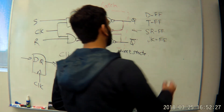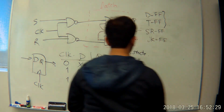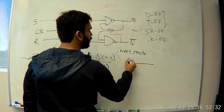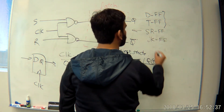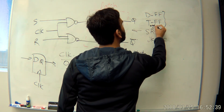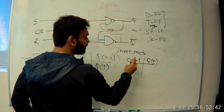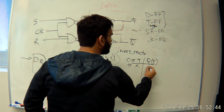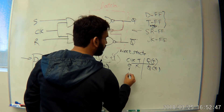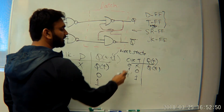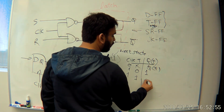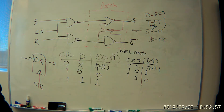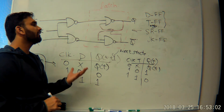T flip-flop is exactly the same structure, but the only difference is that it toggles — T stands for toggling. When the clock is off, it holds the previous state. When the clock is on, instead of copying the input, it gives you the opposite of what it was holding before. These two are the easiest flip-flops we'll deal with.